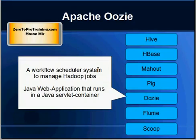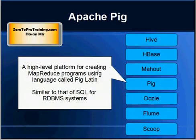Then we have Apache Oozie. This is a Java-based application that is responsible for scheduling jobs in the Hadoop system. It is a workflow scheduler — run this job on this interval, and so on.